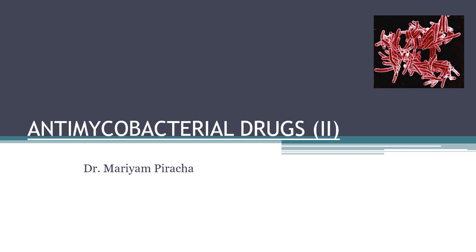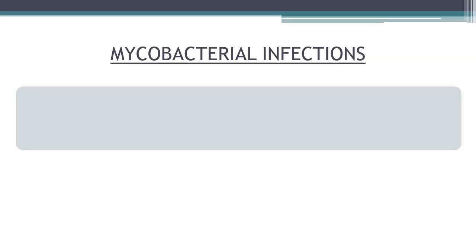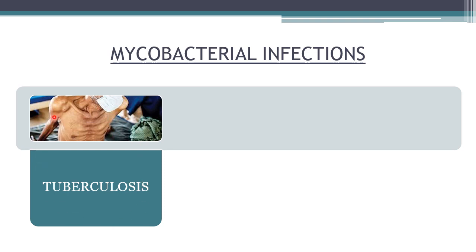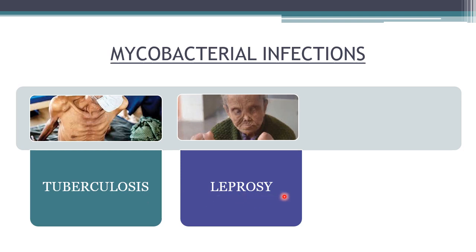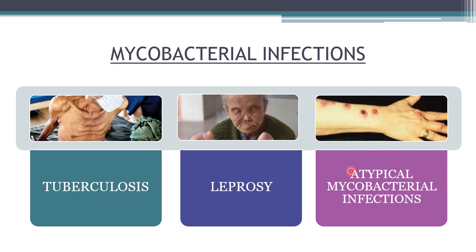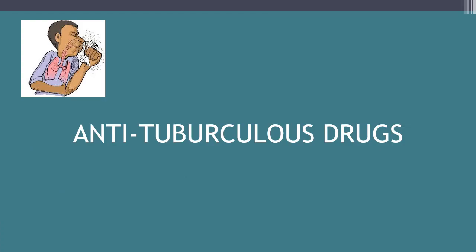Mycobacterial infections are basically of three types: tuberculosis, produced by Mycobacterium tuberculosis; leprosy, where the causative agent is Mycobacterium leprae; and atypical mycobacterial infections, also known as non-tuberculous mycobacterial infections. We'll be discussing all these infections in detail, but first we'll complete tuberculosis. We'll cover the first-line drugs today and the second-line drugs on Monday.